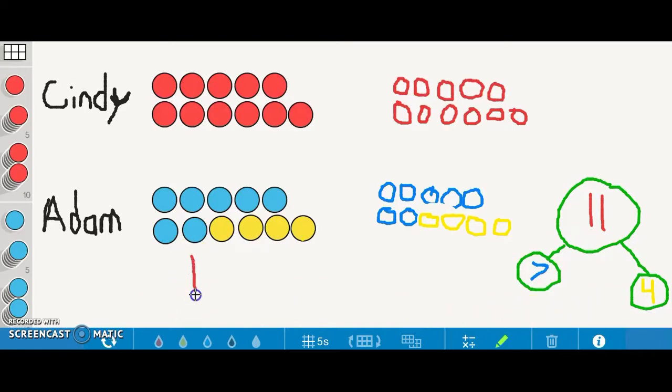In our word problem, Cindy has 11 stickers and Adam has 7 stickers. We found out that the difference between 11 and 7 is 4. We can see that Cindy has 4 more stickers than Adam.